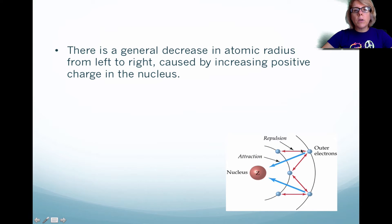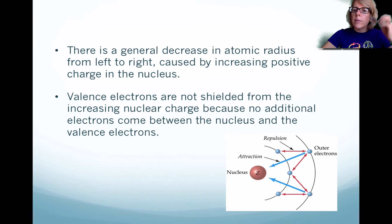What we notice is there is a general decrease in the atomic radii when you go from left to right. And it makes sense because you're increasing the number of protons in the nucleus. As a result, the electrons are attracted to that increasing positive charge. Now, the valence electrons are not shielded from the increasing nuclear charge because there's no electrons that are coming between the nucleus and the outside electrons.